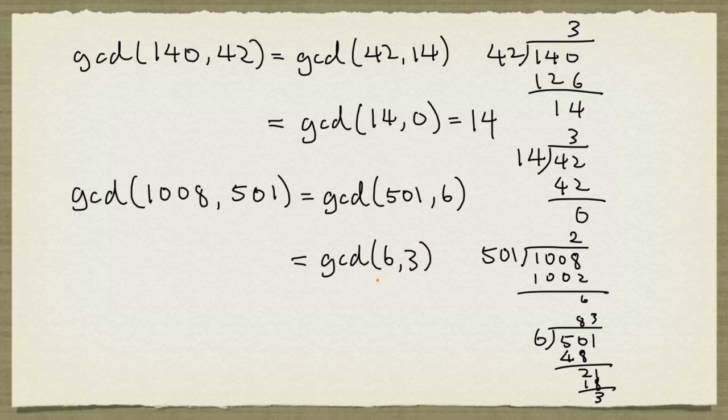Well at this point we can go on applying the second observation again, but we don't really need to do that because it's clear the GCD of 6 and 3 is 3. And so that's the answer. So the GCD of 1008 and 501 is equal to 3.